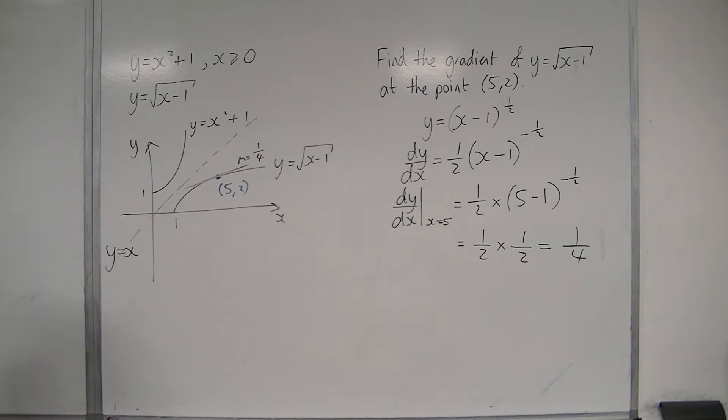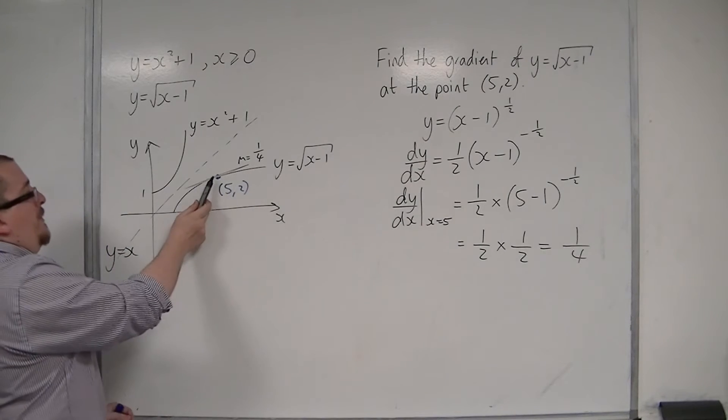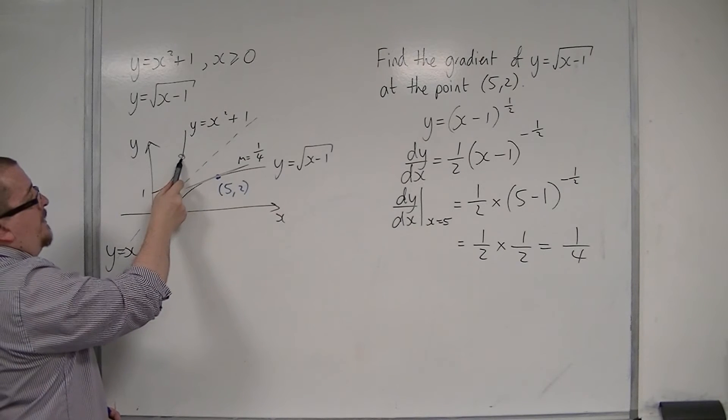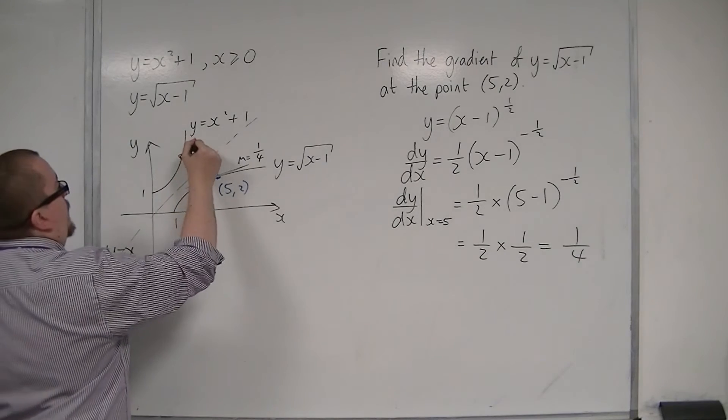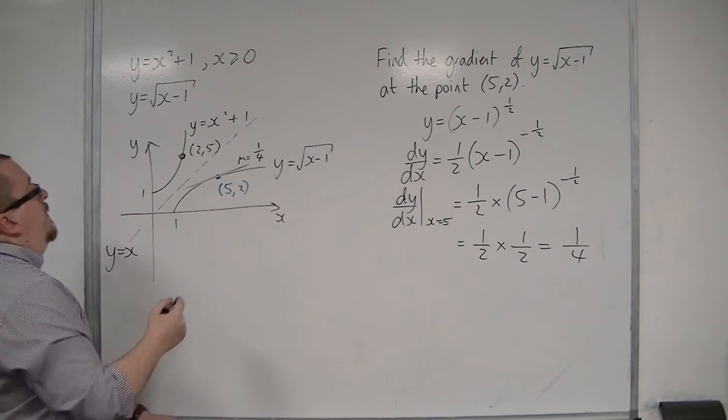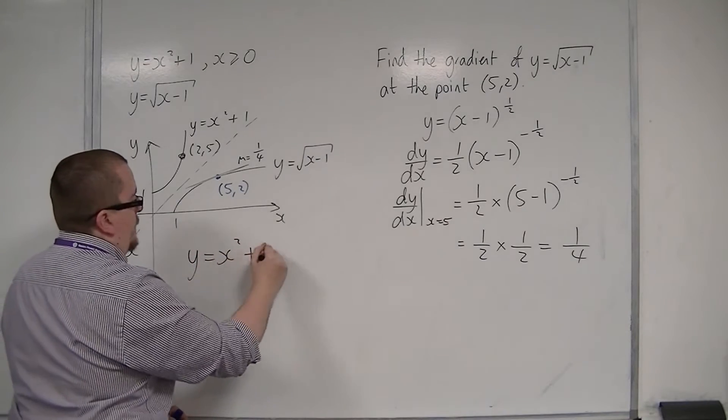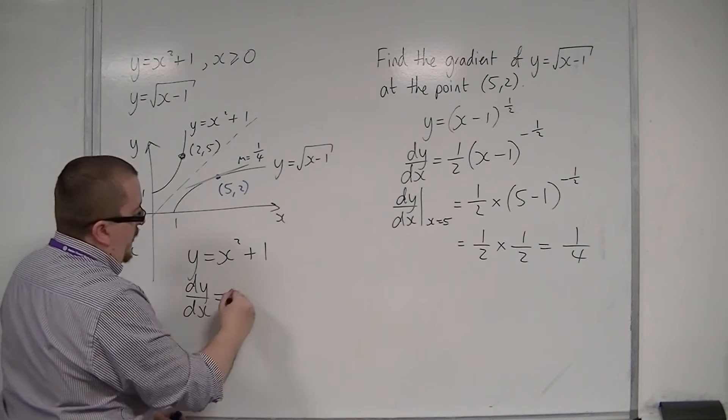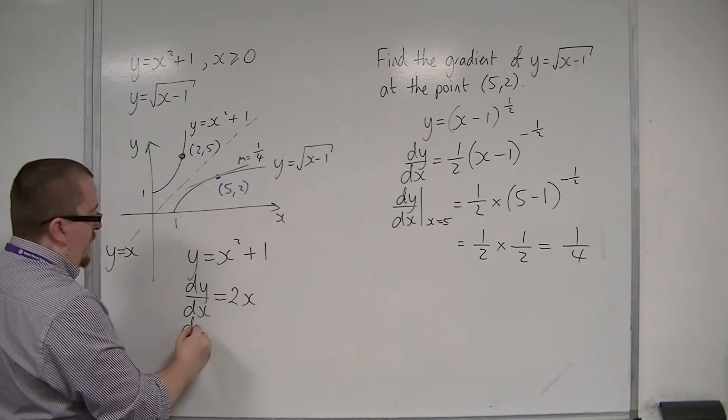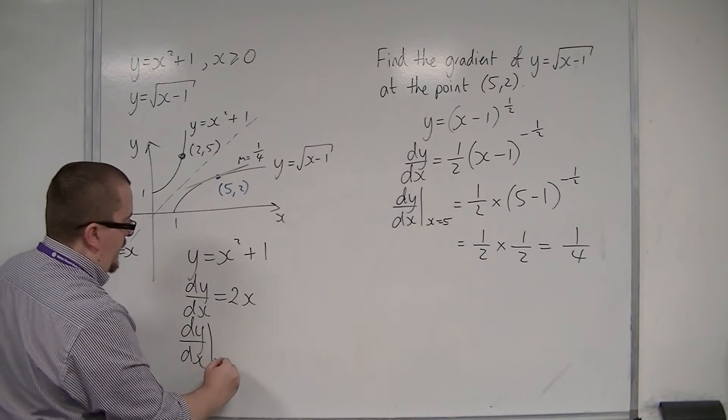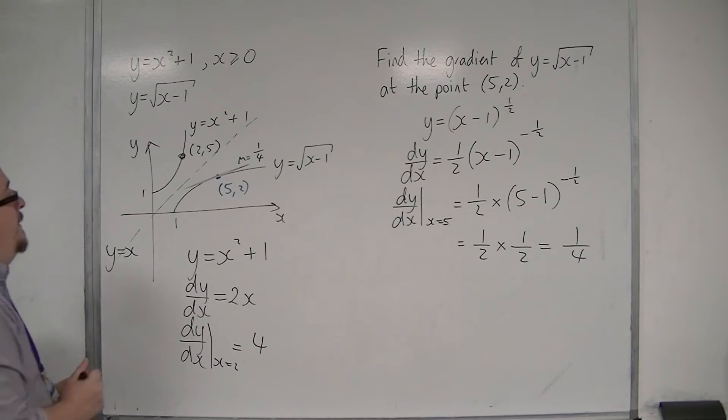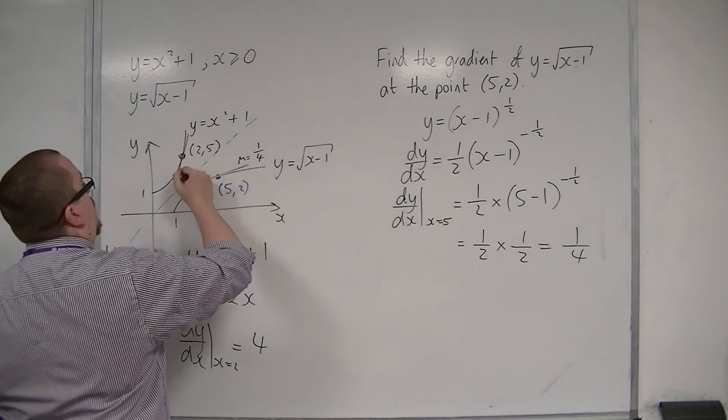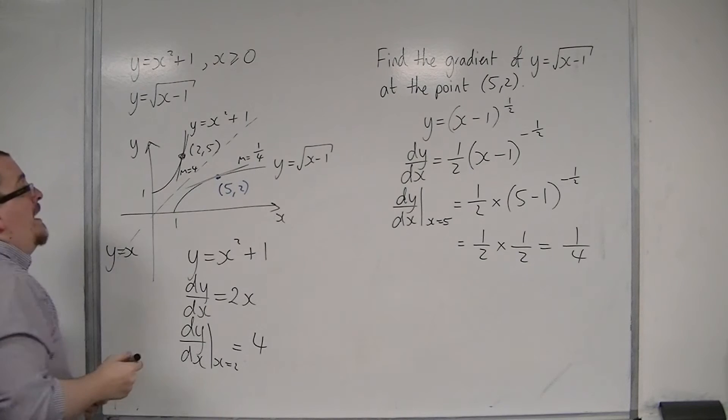Now, if I looked at y equals x squared plus 1 and then found the gradient of the similar point that's over here, reflected in the line y equals x, so that has the coordinates (2,5), then y equals x squared plus 1, dy/dx is 2x. And if I evaluate that when x is 2, I get 2 lots of 2, so 4. So, in actual fact, what I've found is the gradient at that point is 4, the gradient at that point is 1/4.